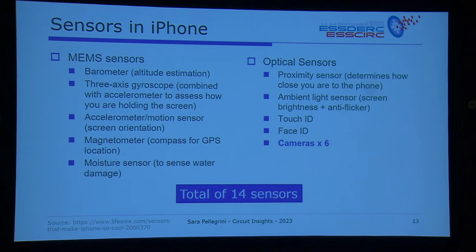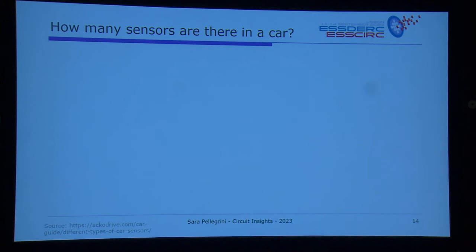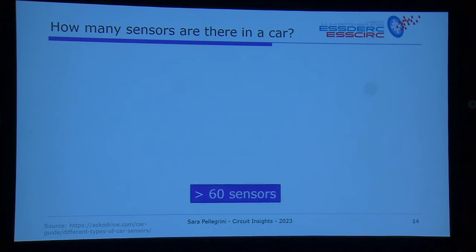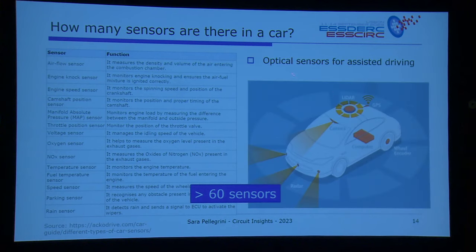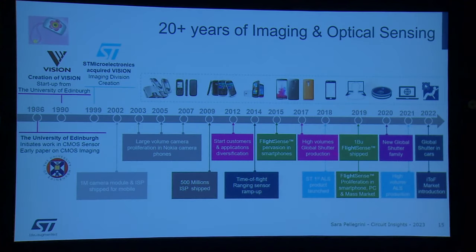So the total is really 14 — a large number. Now let's go to something bigger: a car. How many sensors are in a car, a much more complex system? Someone said 30, someone said 50. There are more than 60 — sensors are everywhere in a car. And again, what we see is an evolution for assistive driving, where cameras and LiDAR come in again. So LiDAR is starting to pervade our lives.